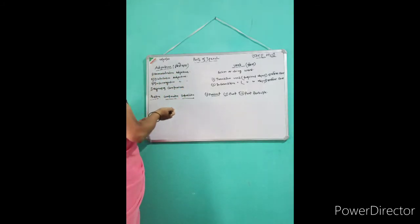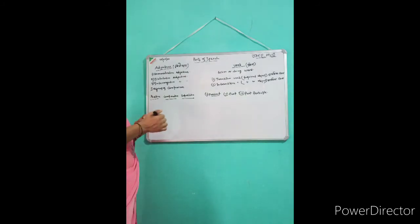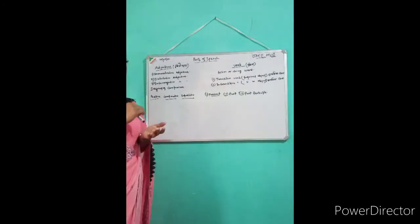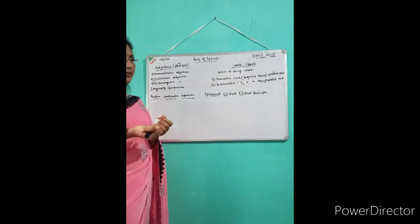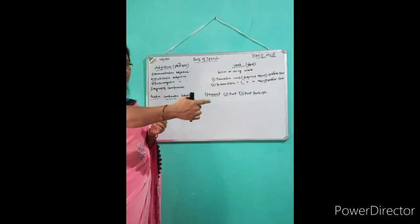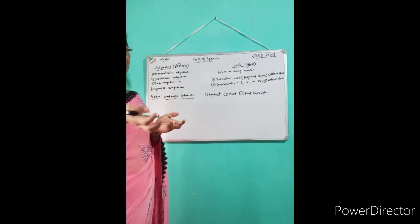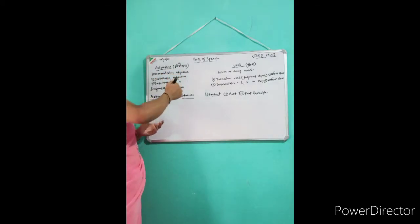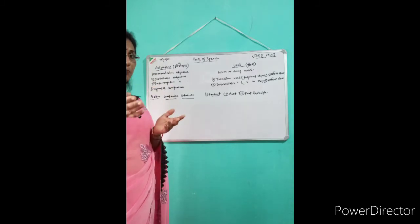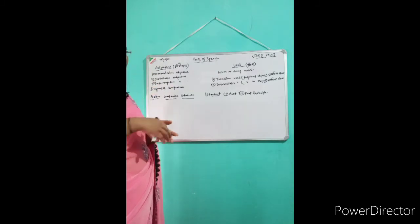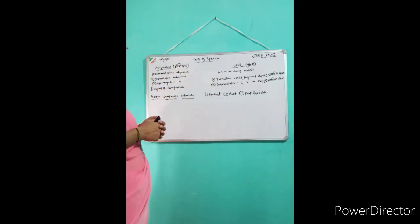Demonstrative adjective, distributive adjective, and interrogative adjective. As I discussed yesterday, what is demonstrative adjective? Demonstrative adjective क्या होता है? जो हमें demonstrate करता है — this man, these ladies, this gentleman, that person. That garden is very attractive. His speech was really amazing. So this, that, these, here, there — these are the demonstrative adjectives.